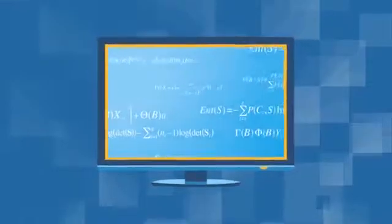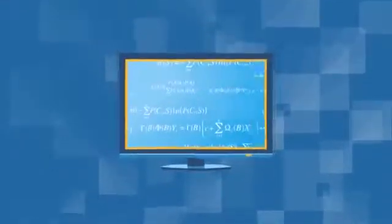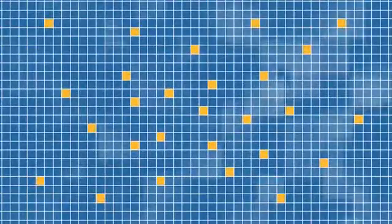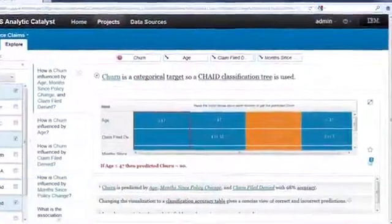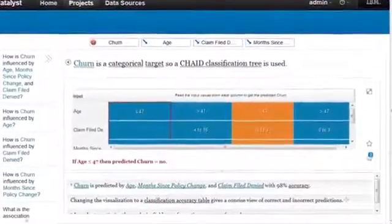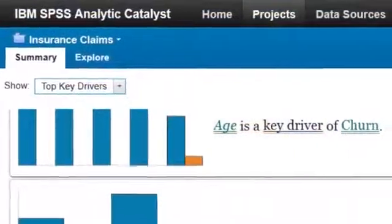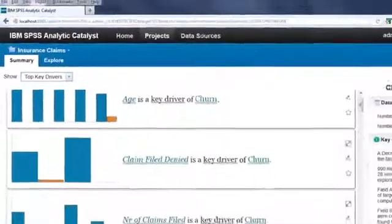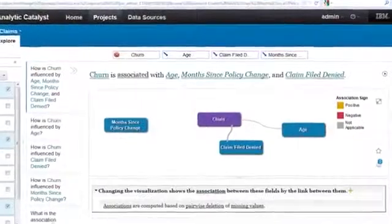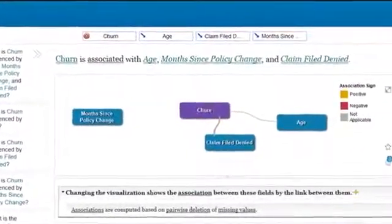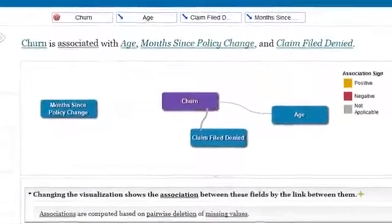SPSS Analytic Catalyst uses sophisticated algorithms to determine which insights are the most interesting from the thousands of combinations that it tests automatically. It selects models based on the data, and with linear or logistic regression-based techniques, it identifies the key drivers of the target field. These identifications include which fields, values, and categories are influential on the target.